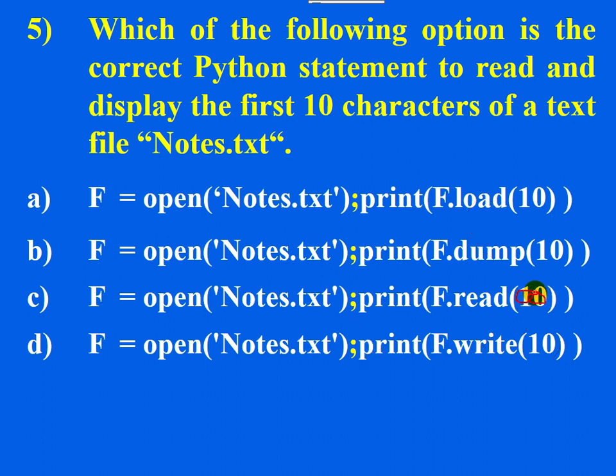If you don't pass any argument, by default the value is -1, which means the entire data from the text file will be read. So C is the correct answer.